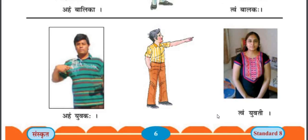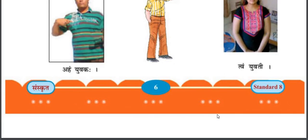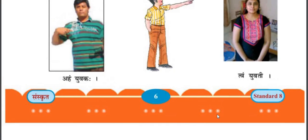Aham Yuvakah — I am a young boy. Twam Yuvati — you are a young girl. So we have learnt pronouns related with Male, Female, and Neuter Gender, and also First and Second Person — Aham and Twam. Now lesson 1 is complete. I hope you all are doing well. You have to do your work properly in all subjects. Thank you.